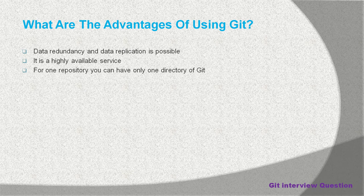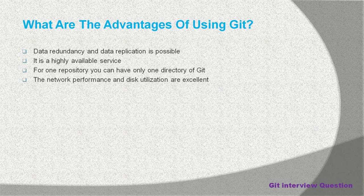For one repository, you can have only one Git directory. Git maintains a dot-git directory for every project. If you clone one repository, you will have one dot-git directory in that repository. If you clone another repository, that repository has a different, private dot-git directory. The dot-git directory maintains all the metadata related to your check-ins and whatever you push to the remote branch.